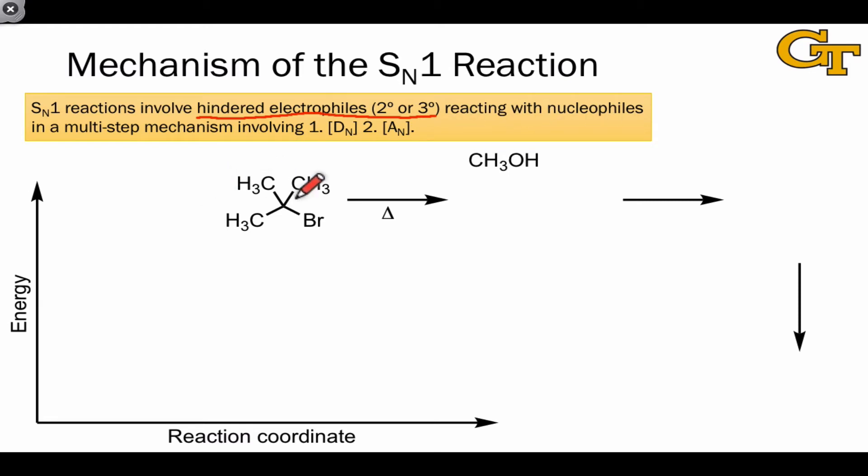SN1 is a two-step process involving first dissociation of the nucleophage or leaving group from the electrophile in a DN elementary step. The conjugate base of the leaving group is an important byproduct, but the key intermediate that carries on to later steps is a carbocation.